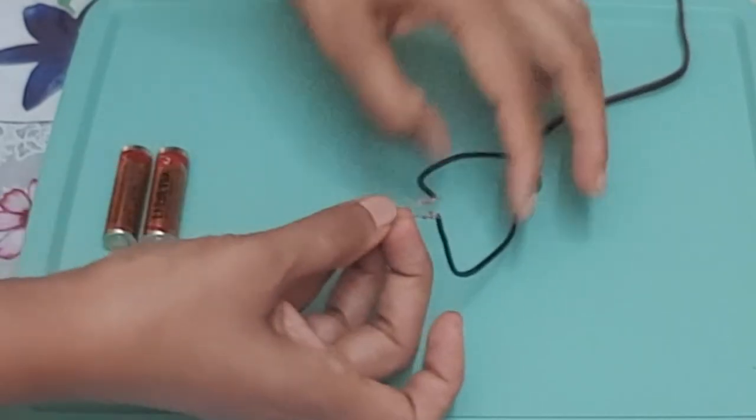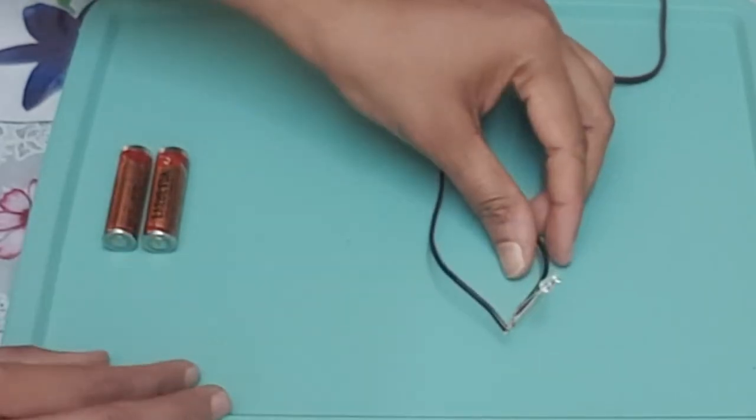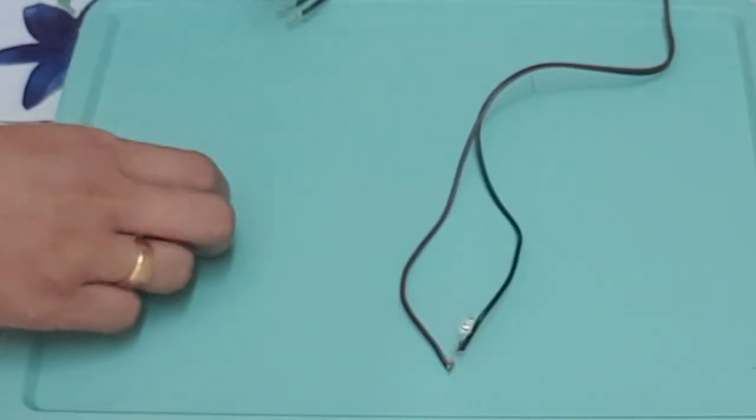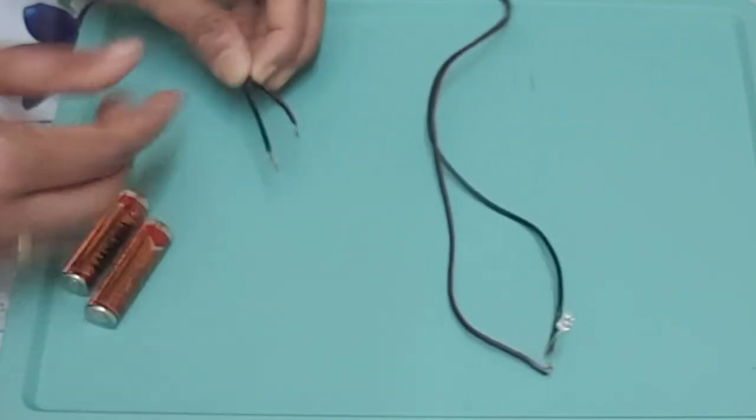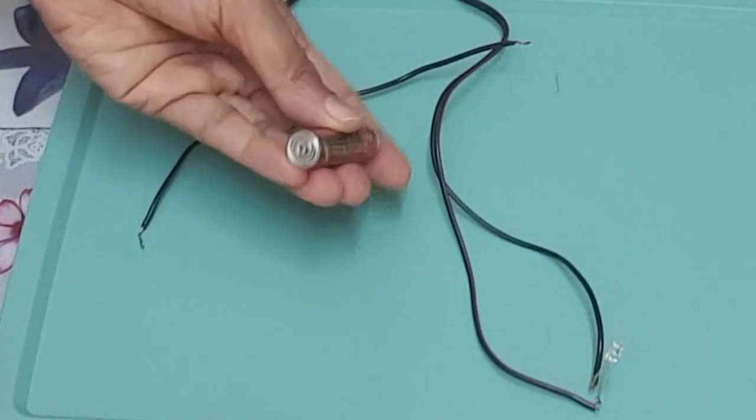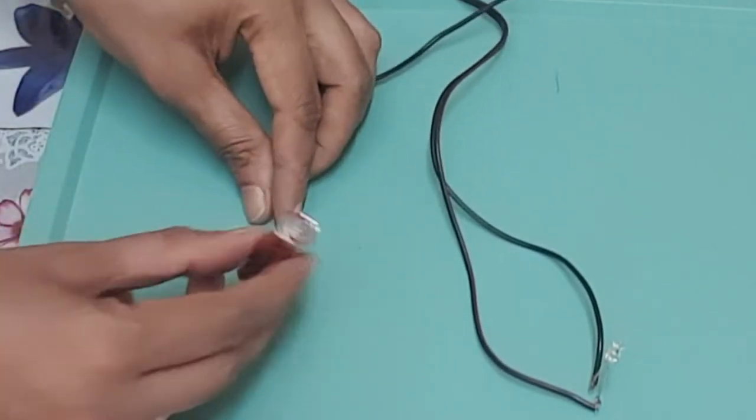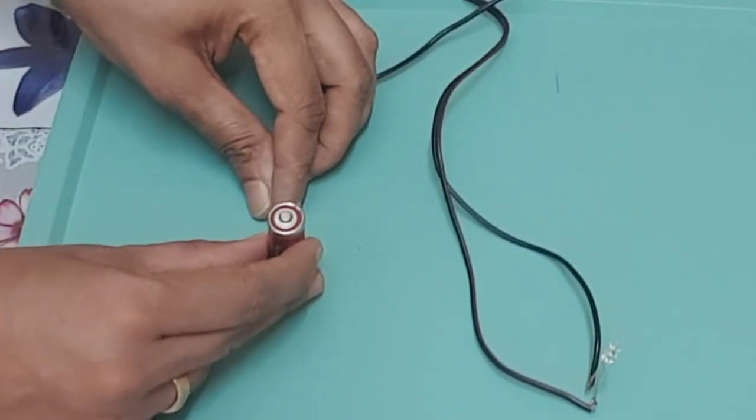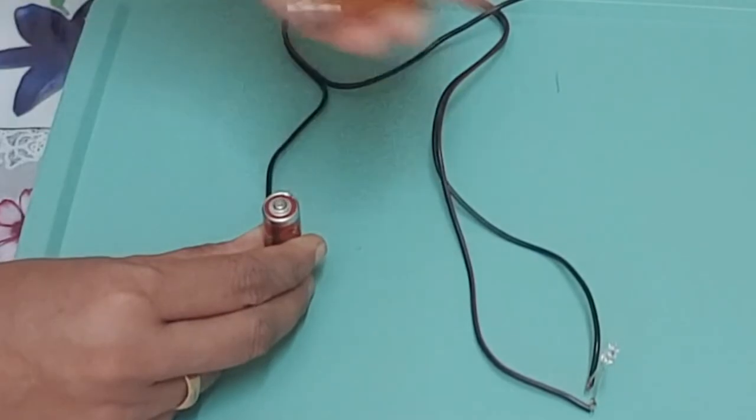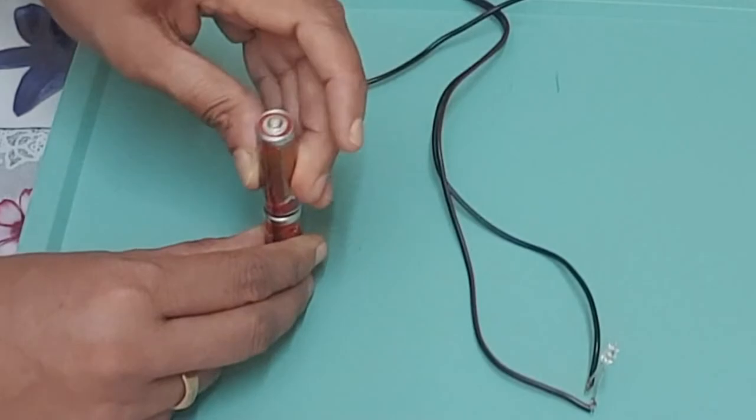Two terminals of the electric cell are connected to two terminals of the bulb. Such an arrangement is an example of an electric circuit. In an electric circuit, the direction of current is taken to be from the positive to the negative terminal of the electric cell.